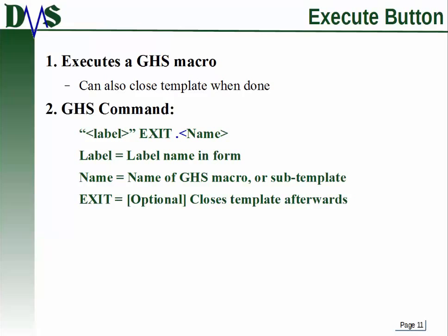You're able to select parts and enter values, but you need an execute button to actually do something with them. The execute button executes a GHS macro, and you can also set it up to close the template when done. The syntax is: the label in quotation marks, then optionally the keyword exit, then a period and the name of your GHS macro. The exit statement is optional — it will close the template after you click the button.